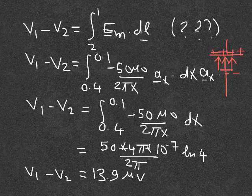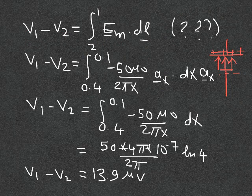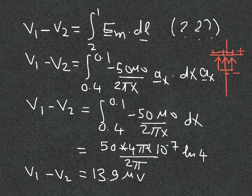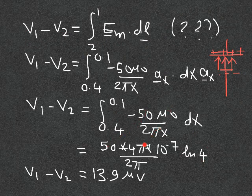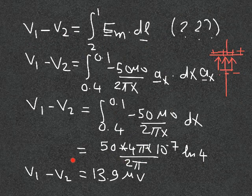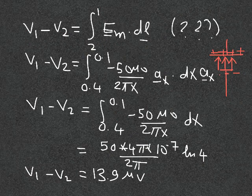Carrying out the integral from x = 0.4 to x = 0.1: a_x · dx a_x gives 1, so we integrate 1/x, which gives ln(x). Evaluating the limits with the negative sign gives ln(0.1/0.4), and the negative sign flips it to ln(0.4/0.1) = ln(4). Substituting the numbers — 50, μ₀ = 4π × 10⁻⁷, and the 2π cancels into the ln — we get 13.9 microvolts. The answer is positive, confirming the integration direction was correct.